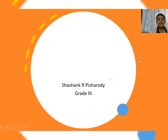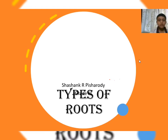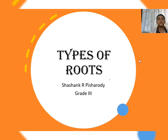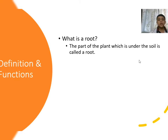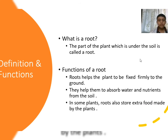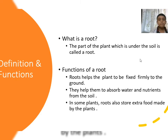Hello everyone. I am Shashank of third grade. Today I am going to talk about types of roots. A root is the part of the plant which is under the soil. Roots help the plant to be fixed firmly to the ground, help absorb water and nutrients from the soil, and in some plants, roots also store extra food made by the plant.